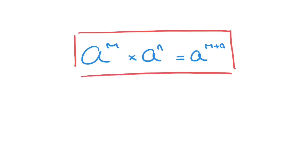A quick example: say we have to simplify 2 to the power of 3 times 2 to the power of 5. Then using this rule, we can state that this equals to 2 to the power of 3 plus 5, and that equals to 2 to the power of 8.